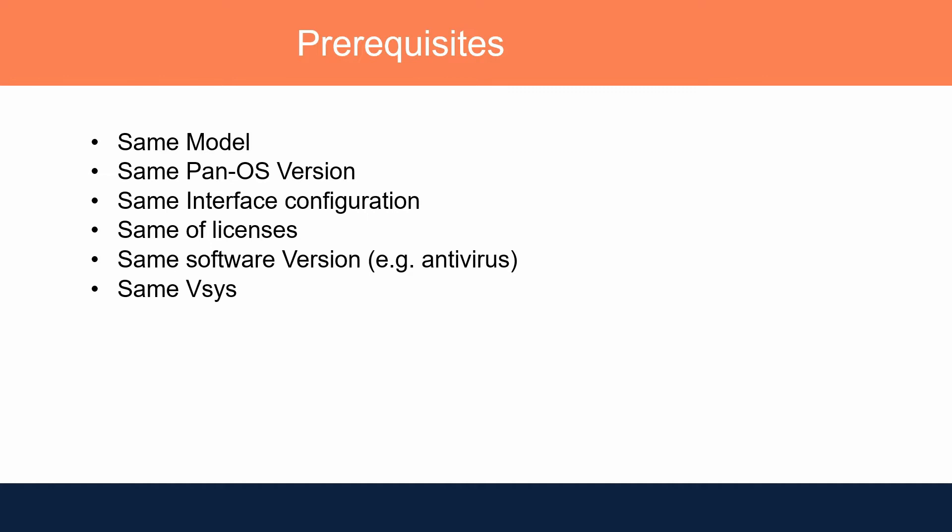The software version must also be the same — for example, anti-virus definitions and WildFire definitions should all match. Additionally, the number of vSys must be the same. vSys stands for virtual system, which is a virtual firewall. If you have created two vSys on firewall A, you need to create the same vSys on firewall B before grouping those firewalls in HA.